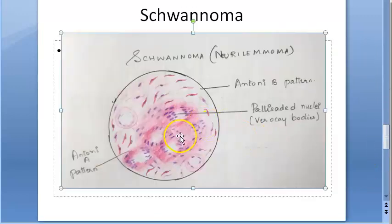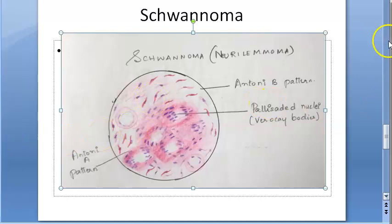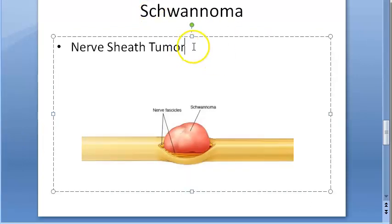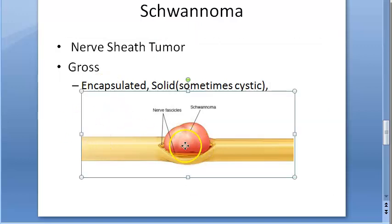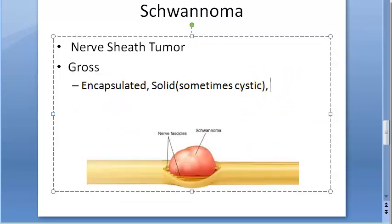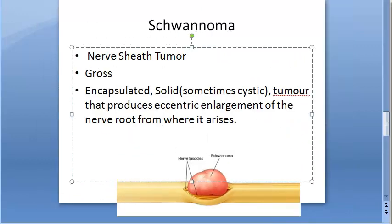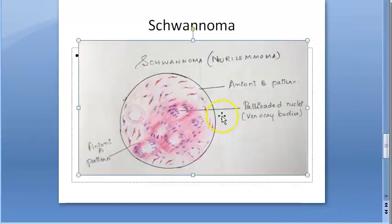Looking at the pathology, grossly it is an encapsulated, solid, sometimes cystic tumor that produces eccentric enlargement of the nerve root from which it arises. Key gross features to remember: encapsulated, solid, sometimes cystic, and it causes eccentric enlargement of the nerve root.